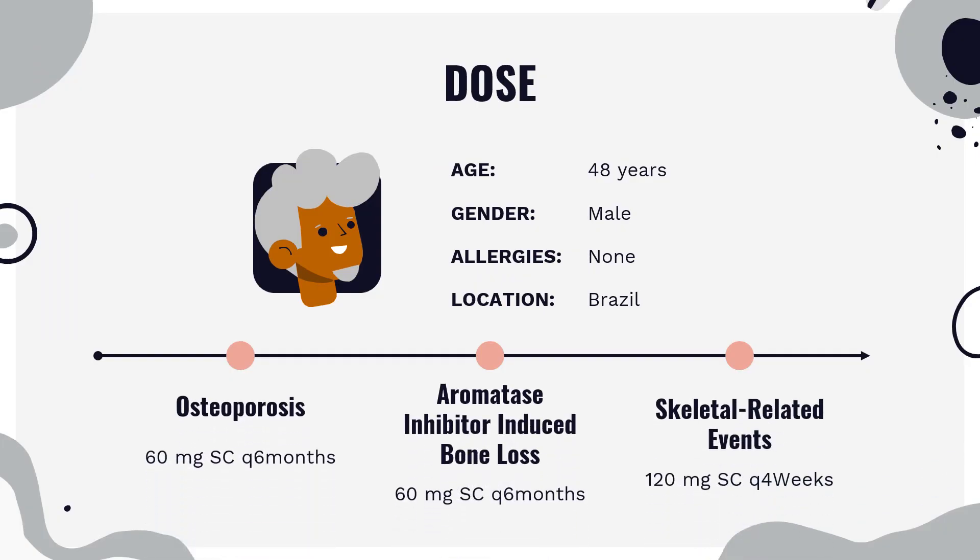Dosing — Osteoporosis (Prolia only): Indicated for postmenopausal women with osteoporosis at high risk for fracture, defined as history of osteoporotic fracture, multiple risk factors for fracture, or patients who have failed or are intolerant to other available osteoporosis therapies. Also indicated for treatment to increase bone mass in men with osteoporosis at high risk for fracture. Dose: 60 mg SC every 6 months. Aromatase inhibitor-induced bone loss (Prolia only): Indicated to increase bone mass in women at high risk for fracture receiving adjuvant aromatase inhibitor therapy for breast cancer. Dose: 60 mg SC every 6 months.